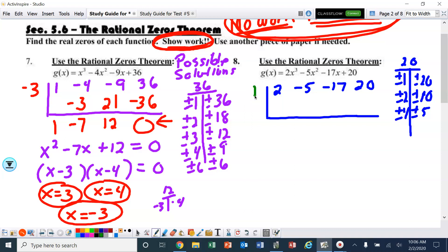I'm going to pick 1. Bring down the 2, multiply, add, multiply, add, and multiply. So 1 definitely is a solution, which the calculator shows. We need to end up with 0. Now I've got 2x squared minus 3x minus 20, set equal to 0.